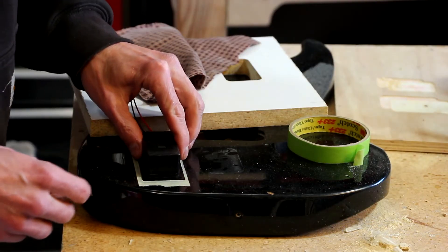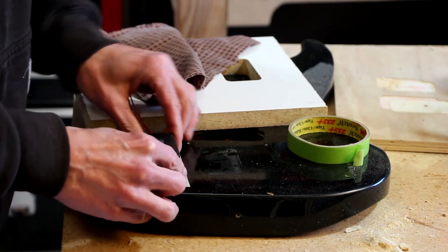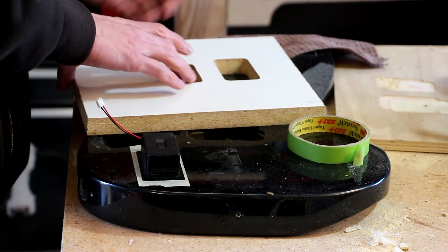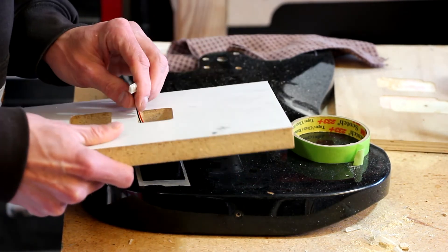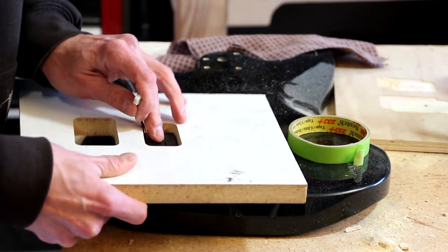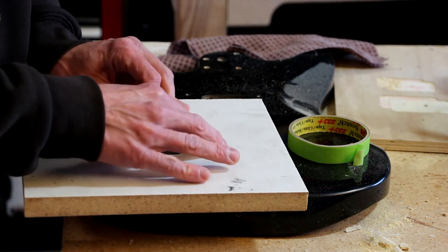Now that I've got this recess fit to the battery box really well I'm going to go ahead and route the rest of the cavity. I'm going to do that by putting the battery box upside down in the cavity and then slipping my template over the battery box.